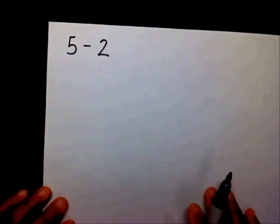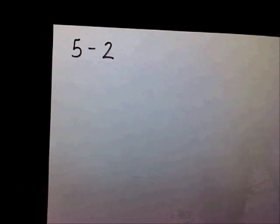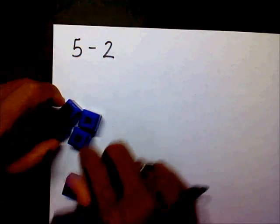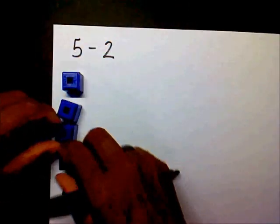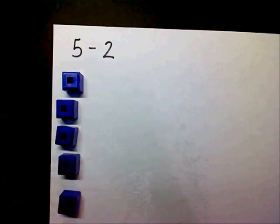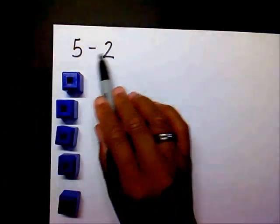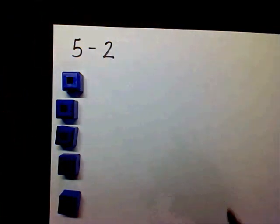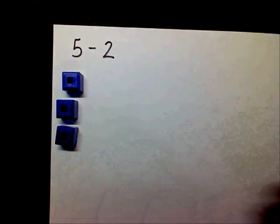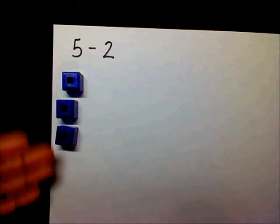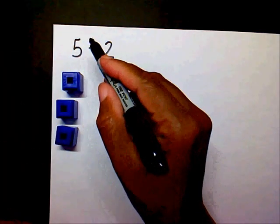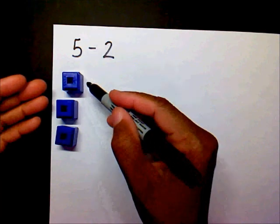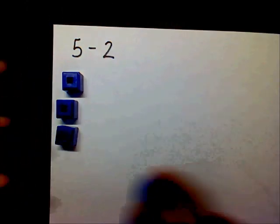Our first problem is five minus two. Five minus two means you have five positives, and you want to take away two positives. Do I have two positives to take away? Yes I do. So I'm going to take away two positives, leaving three positives. So five minus two equals three.